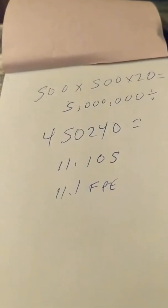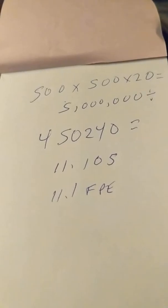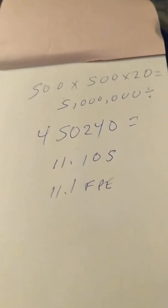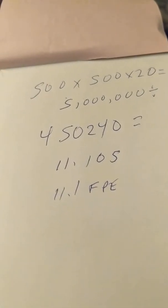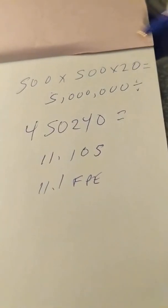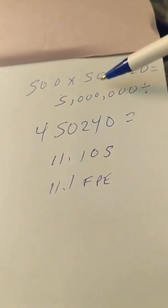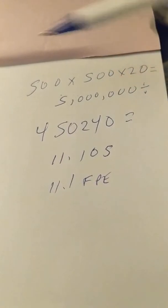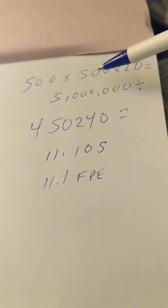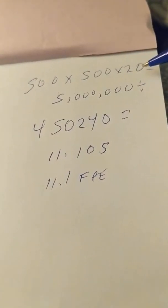Here's how you figure up foot-pounds of energy for a projectile that's in grains. Let's say a pellet weighs 20 grains and it's going 500 feet per second. You take 500 times 500, so that's the speed of the pellet times the speed of the pellet times the grain.